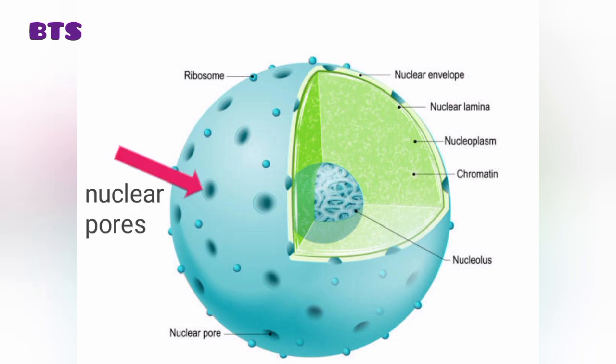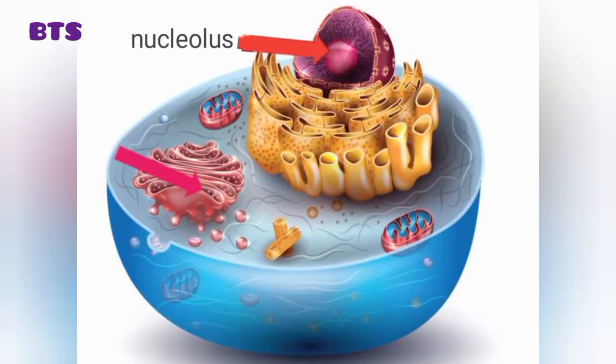Nuclear pores: there are certain pores present in nuclear membranes known as nuclear pores. Nucleolus: the dark region present inside the nucleus is known as the nucleolus. This is the region where ribosomes are assembled.